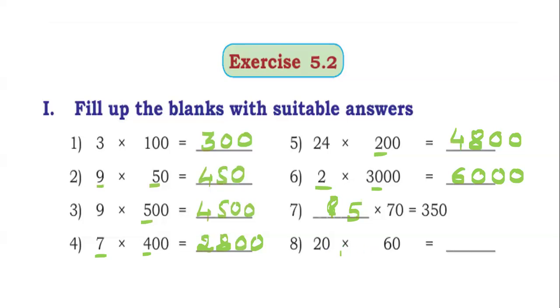20 into 60. 2 times 6 is 12. Right hand side 1 zero. 20 into 60 means 1,200 as the answer.